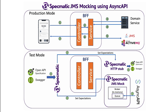Finally, Specmatic uses the application's open API specification to run contract tests against it. Every contract test results in a request being sent to the application, which is received by the controller. The controller invokes the service layer, which in turn fetches the data from Specmatic's HTTP stub and then drops a message onto Specmatic's JMS mock.